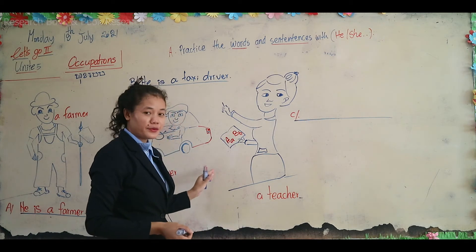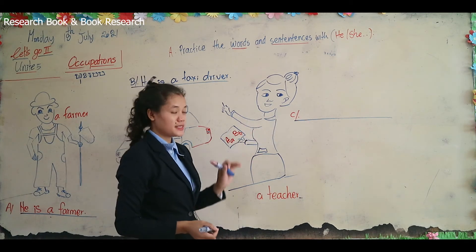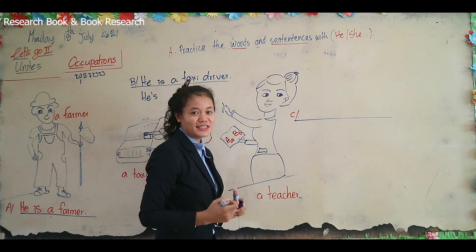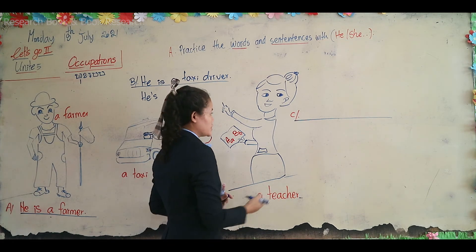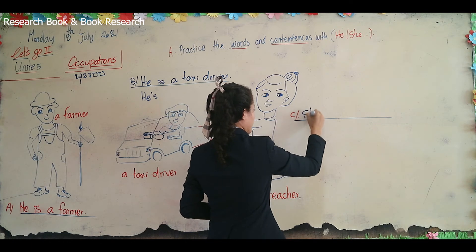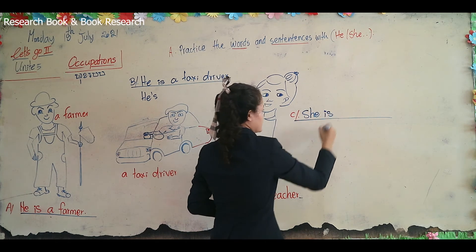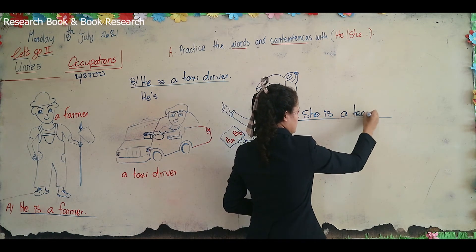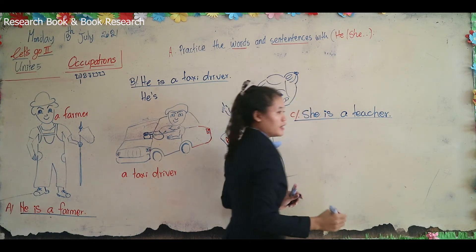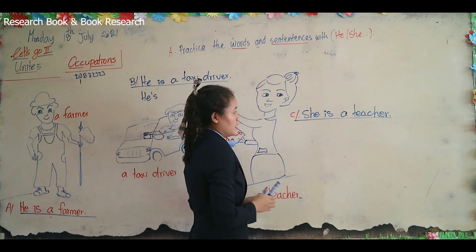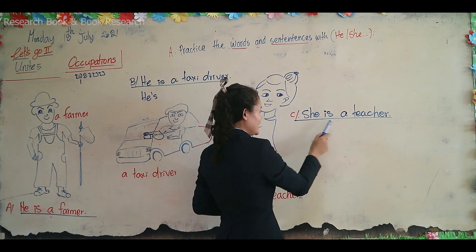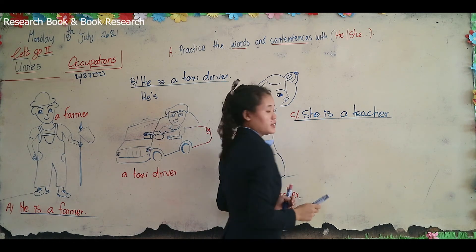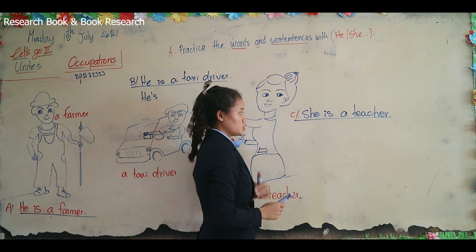The last picture — is it easy for you? This picture shows 'she'. She is a teacher. Repeat after me: she is a teacher. Very good! One more time, short sentence: she is a teacher.